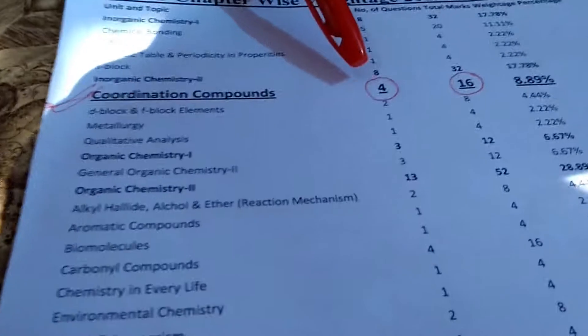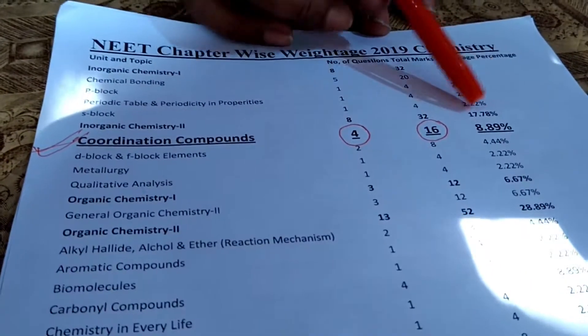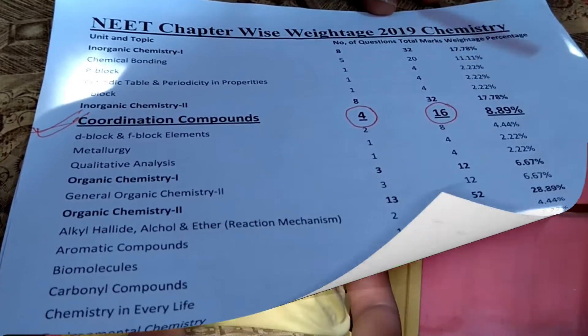I have picked this topic because most students get confused with it, but the topic is really very important. As we can see in the previous year NIT 2019 chemistry paper, there are four questions which carry 16 marks with a weightage of 8.89 percent. In coordination compounds there are a few important topics from which questions arise: number one, nomenclature; number two, hybridization and shape; number three, CFSE — that is Crystal Field Splitting Energy. So in today's class we'll try to learn the nomenclature of the coordination compound.